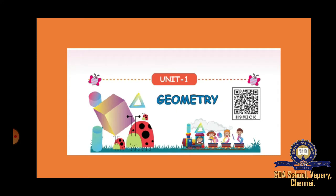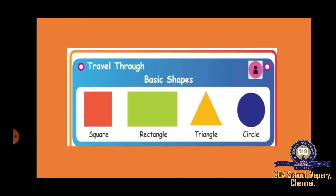Our first unit is geometry. In geometry, what have we learnt? We have learnt the basic shapes. What are the four basic shapes? Square, rectangle, triangle, circle.